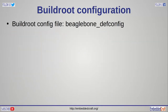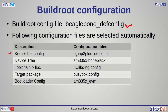As we told earlier, Buildroot requires configuration files. For BeagleBone Black board, we will give beaglebone_defconfig. This config file will automatically select the following config files: for Linux kernel it will select omap2plus_defconfig; for device tree it will select am335x-boneblack; for toolchain — for example for libc — it will select uClibc-ng.config; for target packages we will use BusyBox, so config file name is busybox.config; and for bootloader — for U-Boot — am335x_evm file is selected.